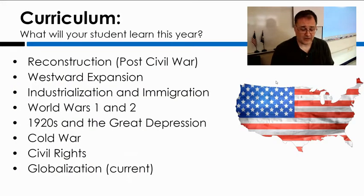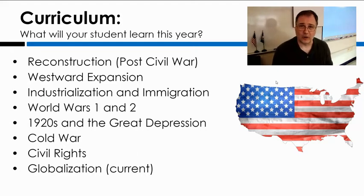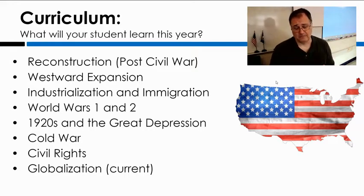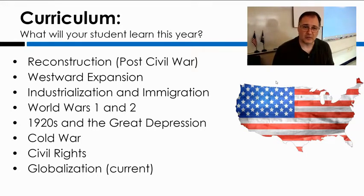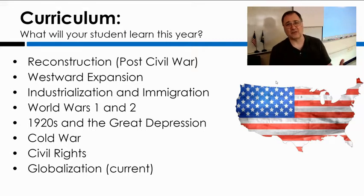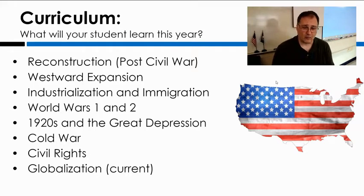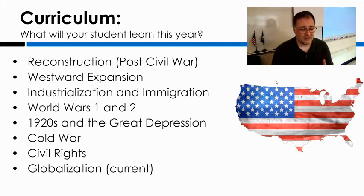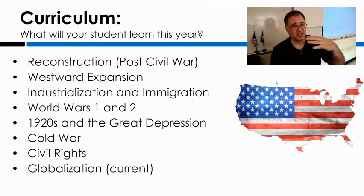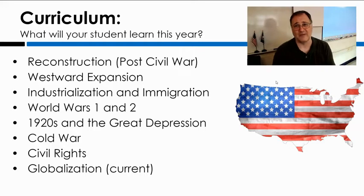In terms of what we're going to cover this year, we start where sixth grade left off at the end of the Civil War. We'll begin with exploring how the United States rebuilt after the Civil War with the Age of Reconstruction. We'll look into the expansion into the West towards the Pacific, the growing industrialization and waves of immigration affecting the U.S., and the rise of the nation as a world power in World War I and World War II.